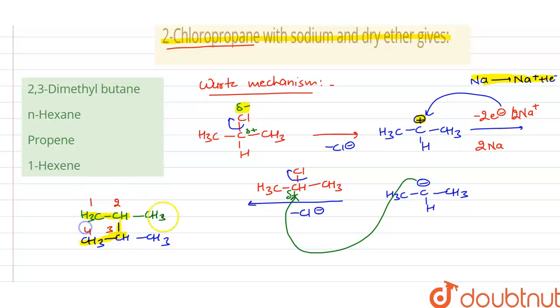We have methyl groups as substituents at the second and third positions, so it will be 2,3-dimethyl. For n=4 we use butane with the alkane group, so we can see our first option is correct. I hope you got this concept. Thank you.